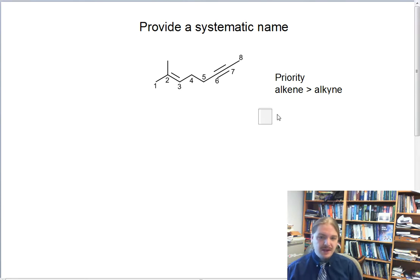So we would number this to give the alkene the lower number and the alkyne the higher number. Then we would name this oct, eight carbons, and I'm going to use 2-en-6-yne. For a name like this, putting the numbers right in front of these infixes is actually more clear than anything else we might try to do. If you put 2,6-octanine, you wouldn't know which number went with which functional group.